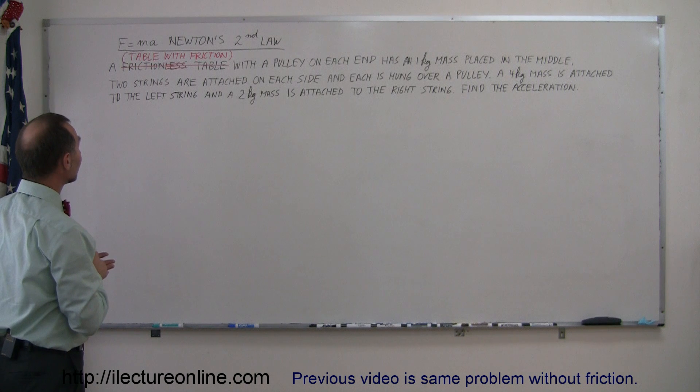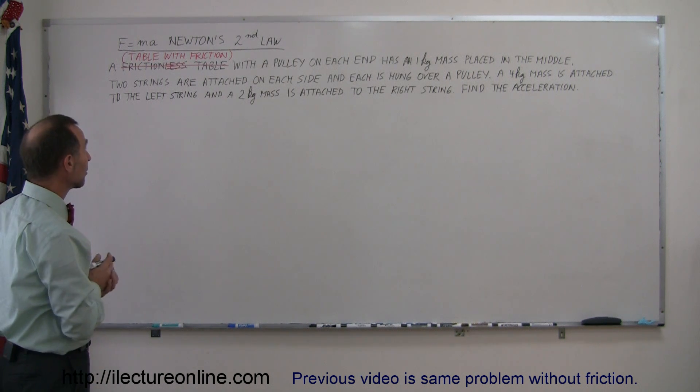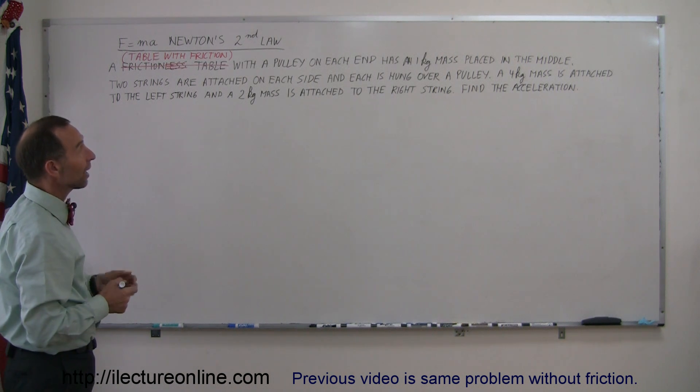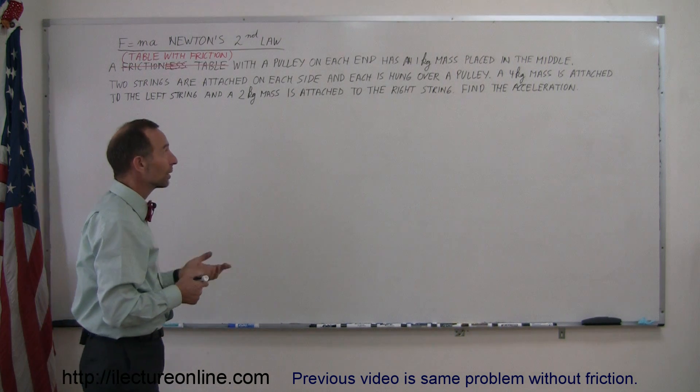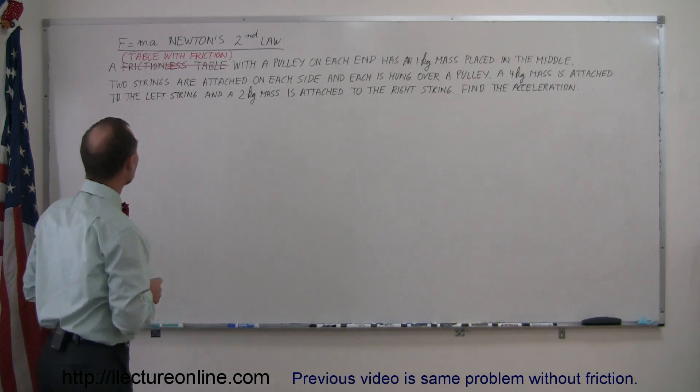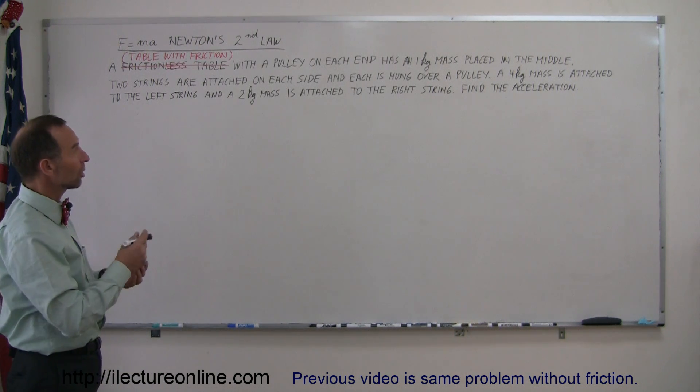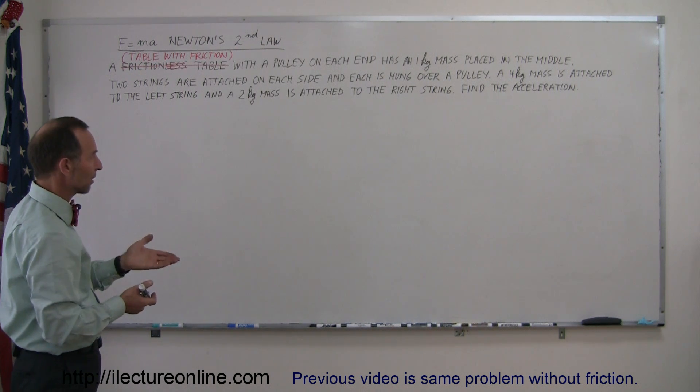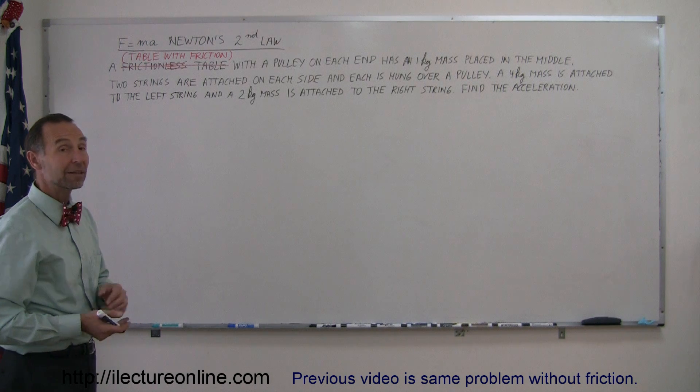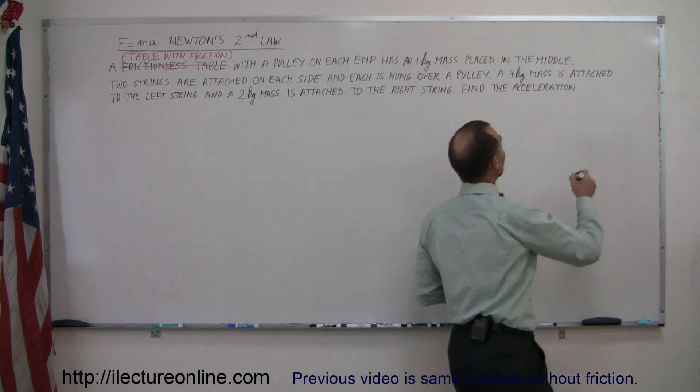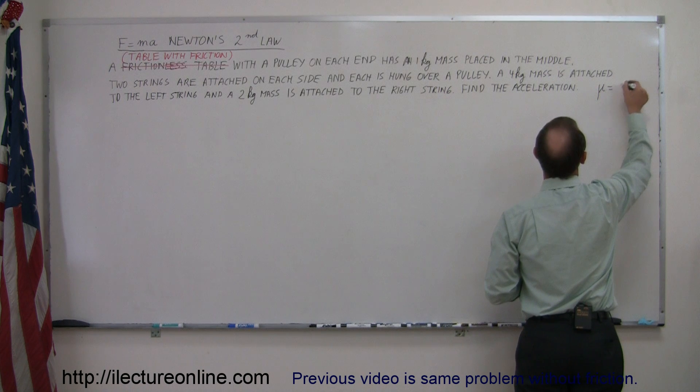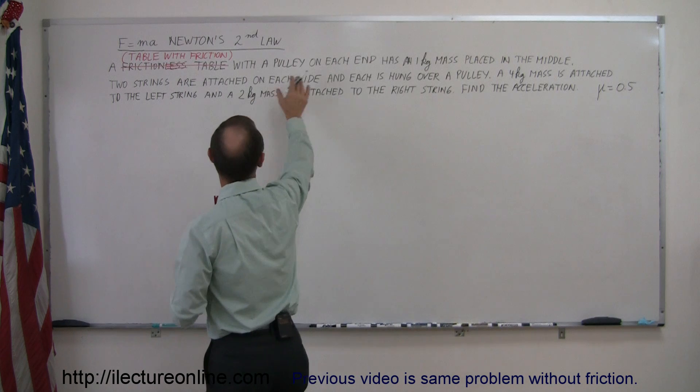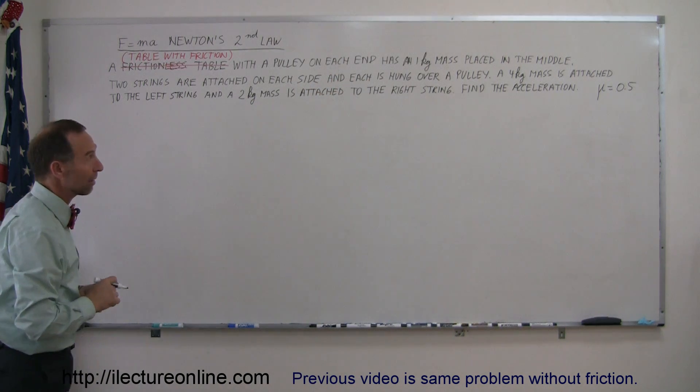We now have a table that has friction. Before, I did the same problem where the table did not have friction. With a pulley on each side, there's a one kilogram mass placed in the middle with two strings attached on each side, hung over the pulleys. A four kilogram mass is attached to the left string and a two kilogram mass to the right string. Find the acceleration. Also, the friction coefficient μ equals 0.5, affecting the one kilogram mass.